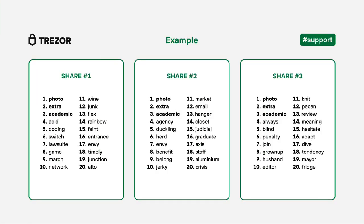Your full Shamir Backup consisting of three shares of 20 words each will look like this. This way you know that these shares belong to the same Shamir Backup. Then you are all set. Now store your shares in different places to maximize your security. Always think about the practicality and how long it will take you to collect the necessary shares.